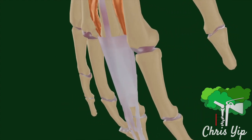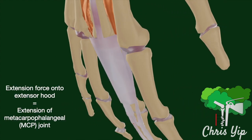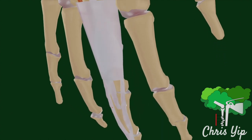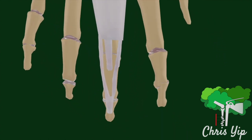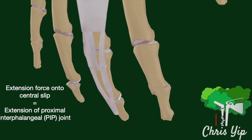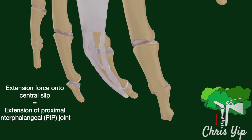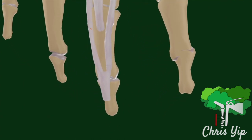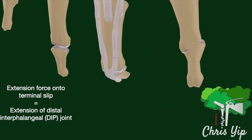When tension is exerted onto the extensor hood, it leads to extension of the metacarpophalangeal joint. When tension is exerted onto the central slip, it leads to extension of the proximal interphalangeal joint. When tension is exerted onto the terminal slip, it leads to extension of the distal interphalangeal joint.